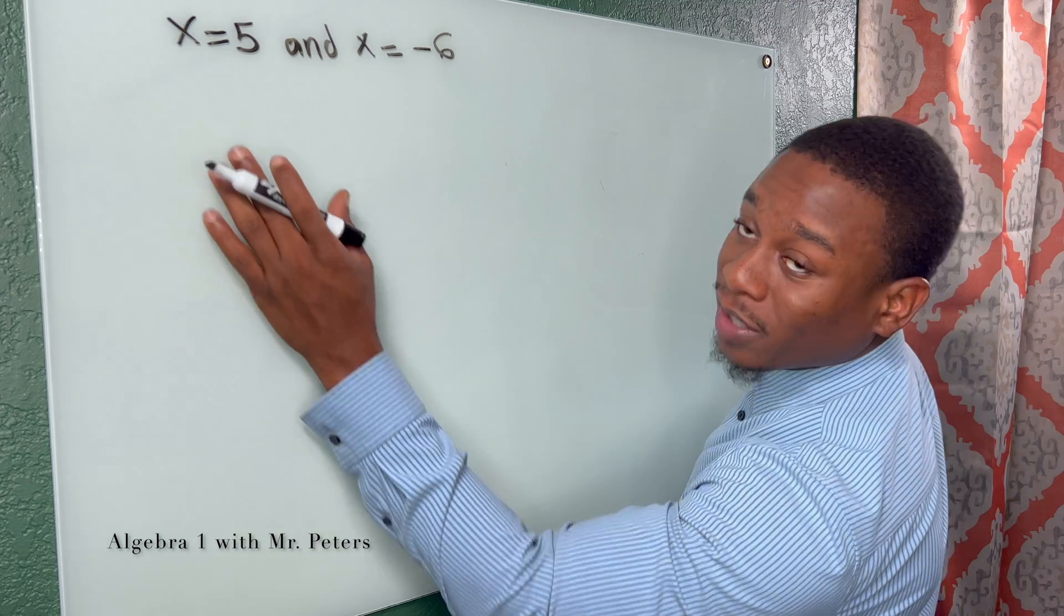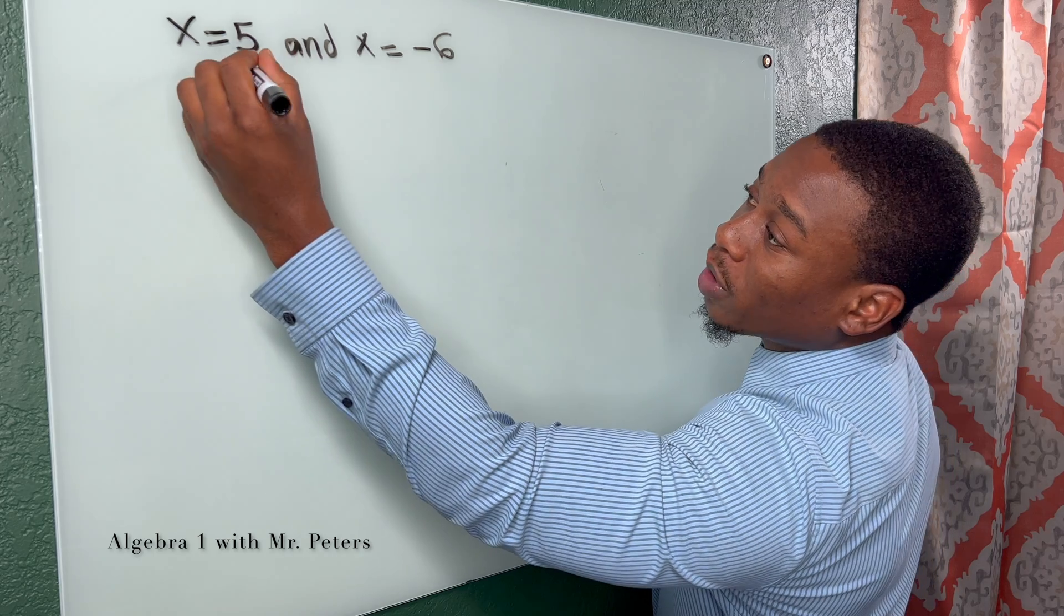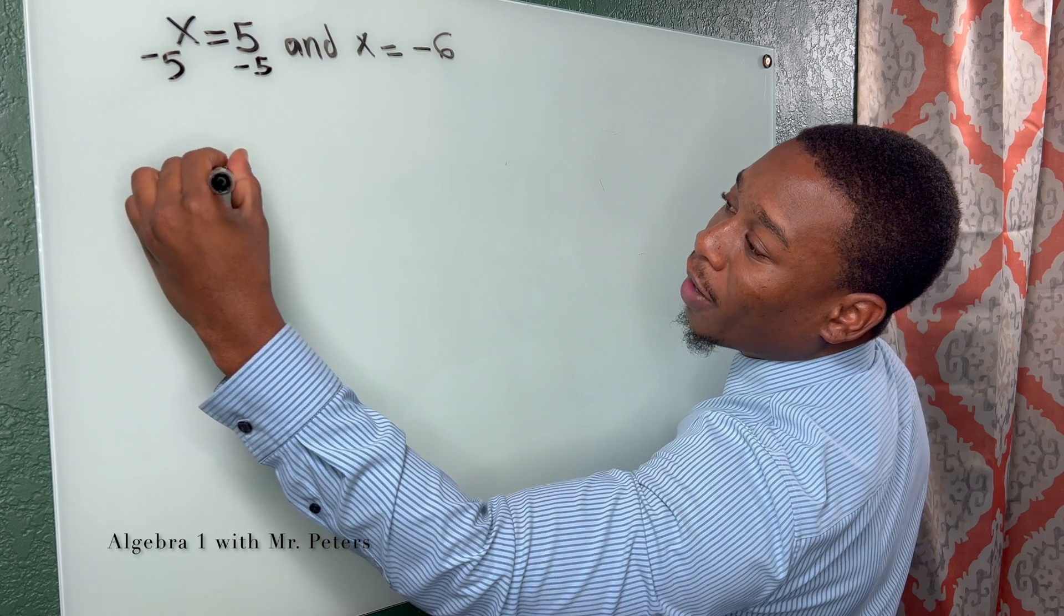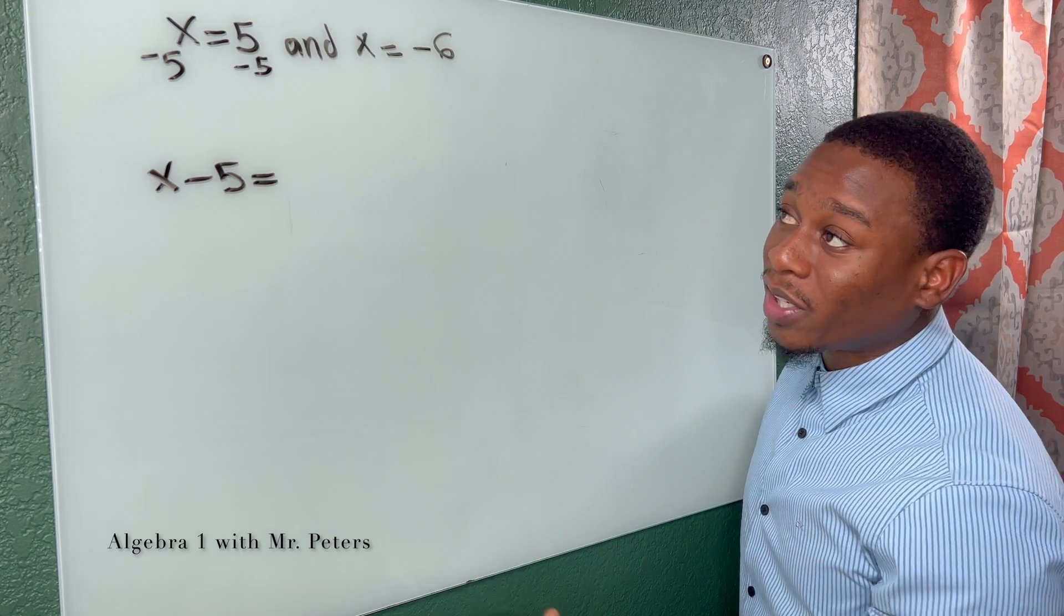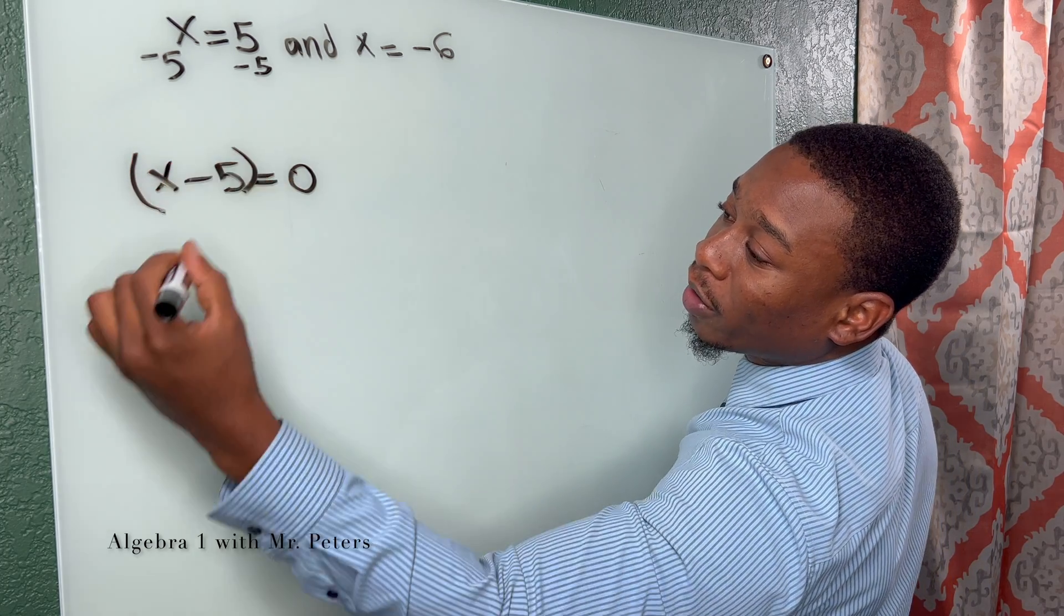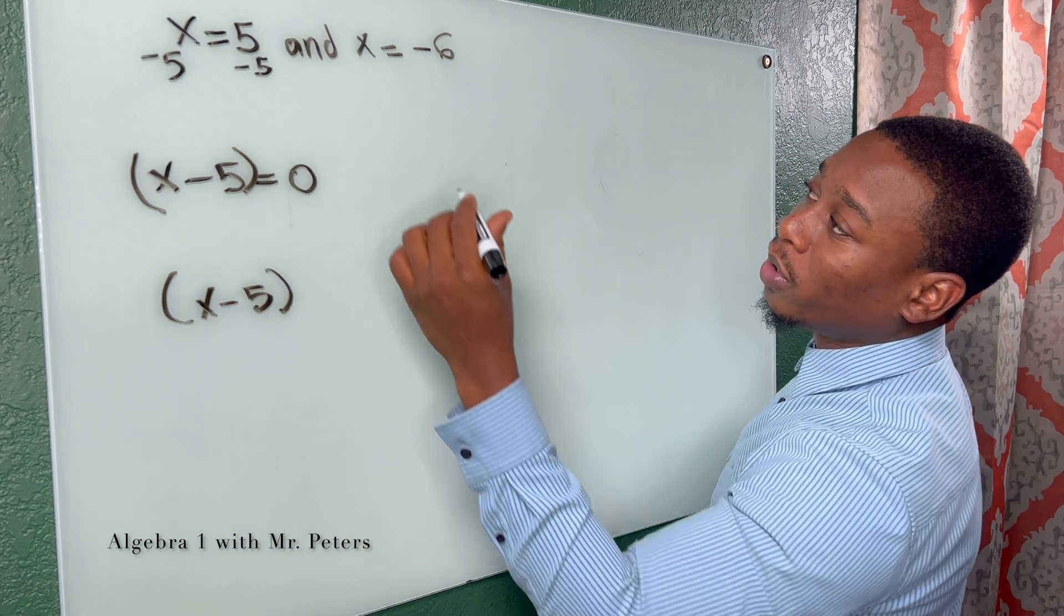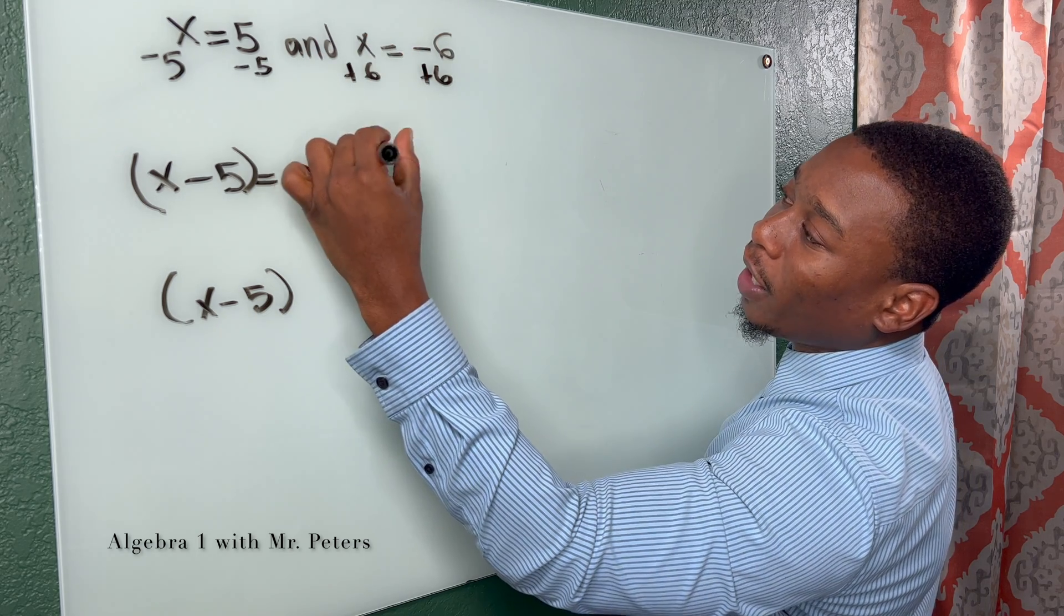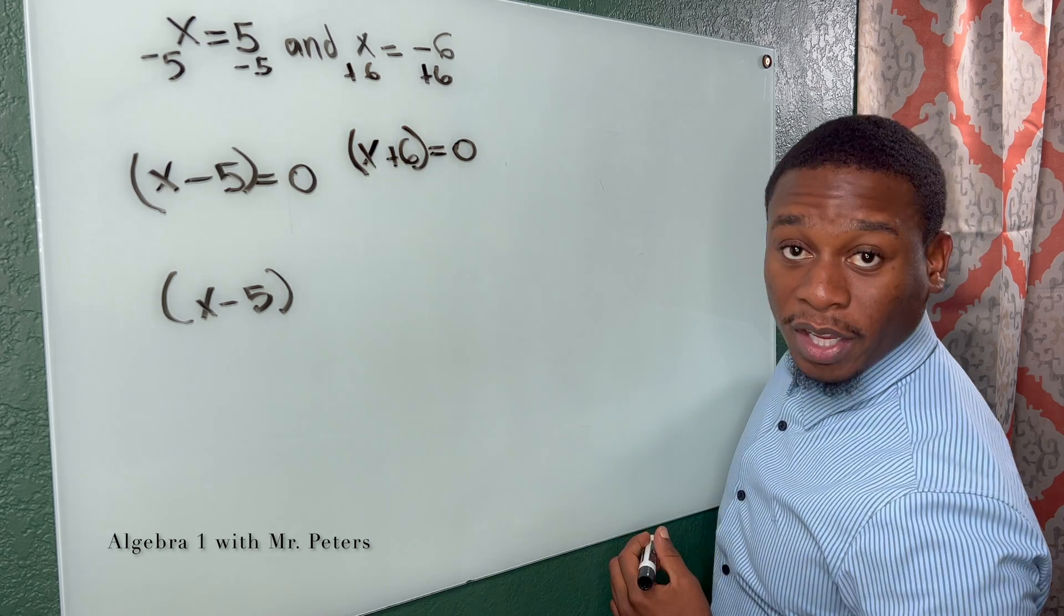So we say that x is equal to five. Remember, we just had that factor set to zero. So if we subtract five from both sides, I would have x minus five is equal to, and guys, there has to be something on the other side. Five minus five is zero. So this is my first factor. Let's write that, x minus five. Then I go ahead and do the same thing with the second one. So once I add six on both sides, I'm going to have x plus six is equal to zero. And this is my second factor.